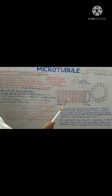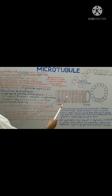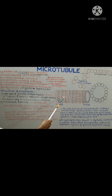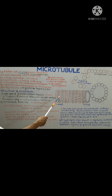Microtubules are dynamic structures — they undergo continual assembly and disassembly within the cell. The functions of microtubules include determining cell shape, participating in cell locomotion, the intracellular transport of organelles, and separation of chromosomes during mitosis.